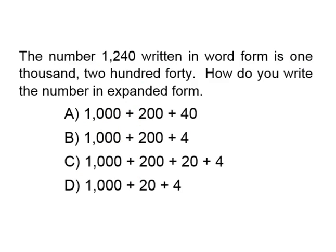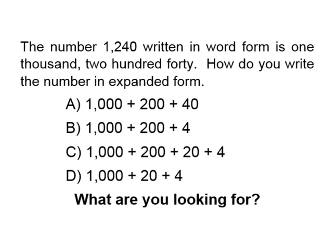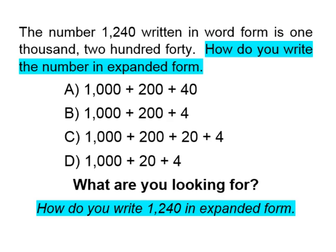Let's do a similar problem. The number 1,240 written in word form is one thousand two hundred forty. How do you write the number in expanded form? We are looking for the number written in expanded form for one thousand two hundred forty. A says one thousand plus two hundred plus forty. B is one thousand plus two hundred plus four. C is one thousand plus two hundred plus twenty plus four. And D is one thousand plus twenty plus four.